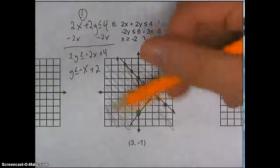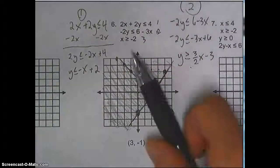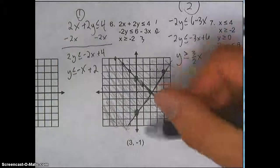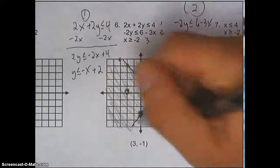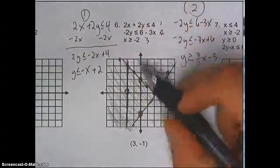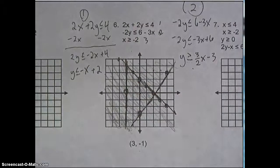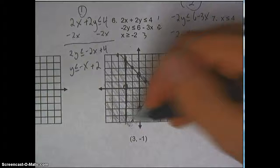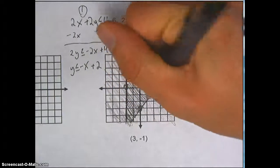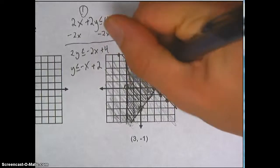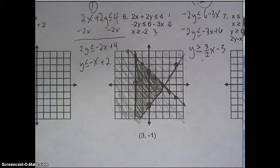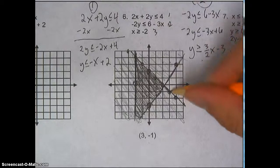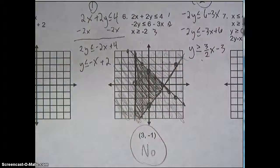So far I've shaded this region twice. We've got one more equation: x is greater than or equal to negative 2. x equals negative 2 is a straight vertical line at negative 2. Draw a vertical line — it's a solid line because it's greater than or equal to. It's all the x's greater than that, so everything to the right. The area shaded three times is this triangle-looking thing in the middle. The given point is just outside the solution set, so the answer is no — not in the solution set.